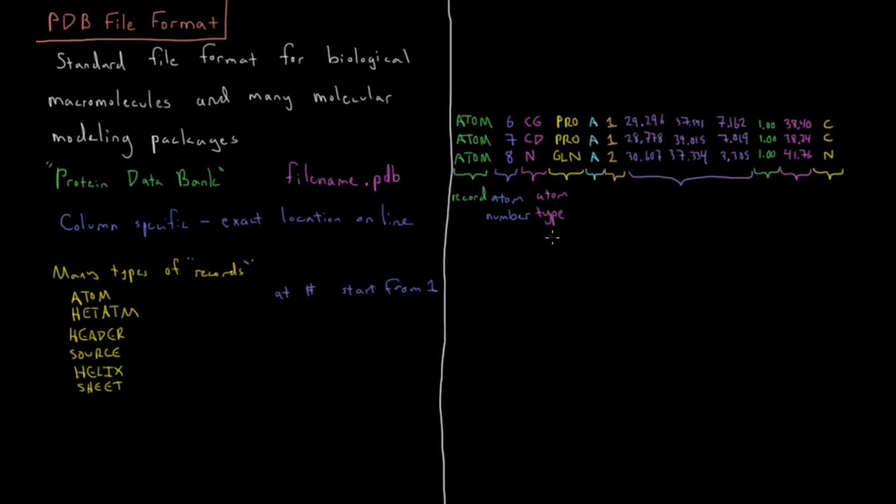This value in yellow here is the residue. The residue in this case explains which type of amino acid we're in. Six and seven are in a proline and eight is a glutamine. Those are the three letter amino acid abbreviations. You could also have values within nucleic acids for adenine, thymine, guanine, cytosine, which would look like GUA or THYA-DE, et cetera.